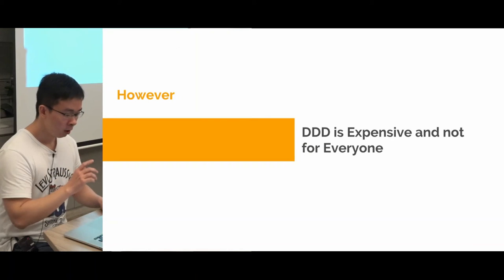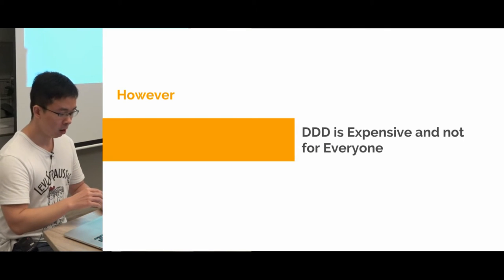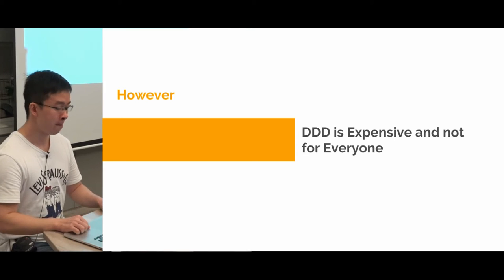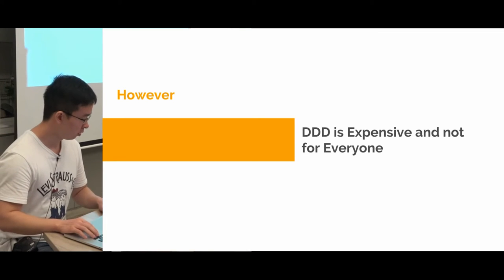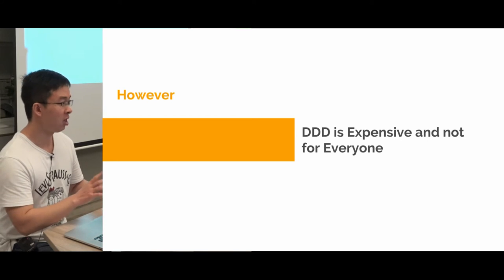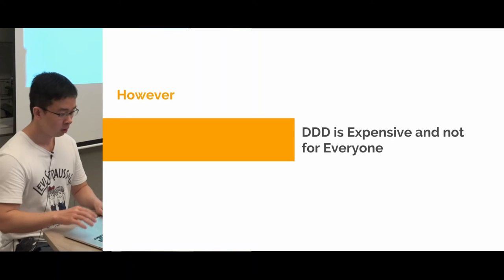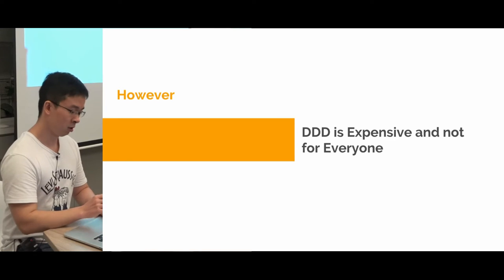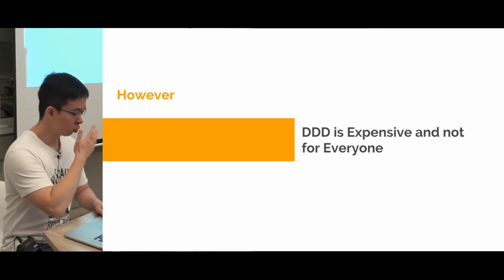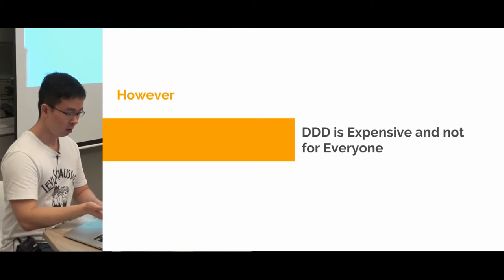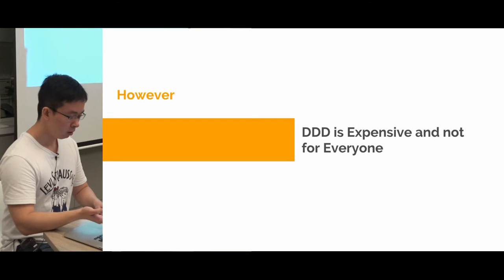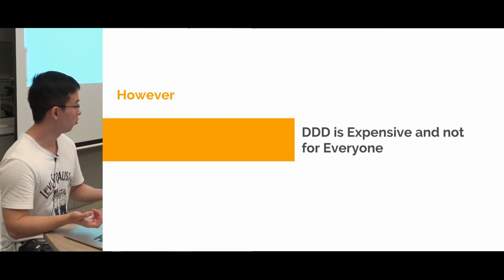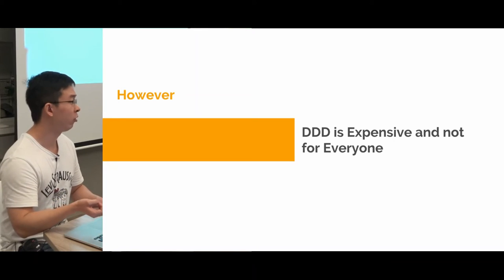However, back to the first slide, DDD is for complex needs because it's very expensive - it's not for everyone. If you want to keep DDD clean, you have to isolate a lot of domains or models. Microsoft is not recommending DDD for everyone, only for complex needs. So do we still need DDD? From what I just talked about, DDD has very useful leading concepts for us, like data integrity on the workflow. I believe we are actually following it already.